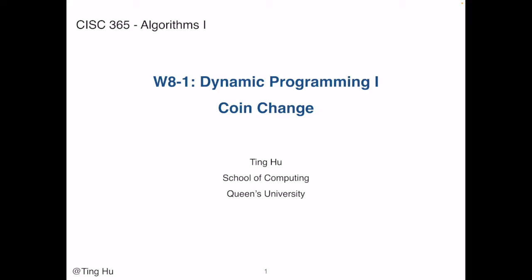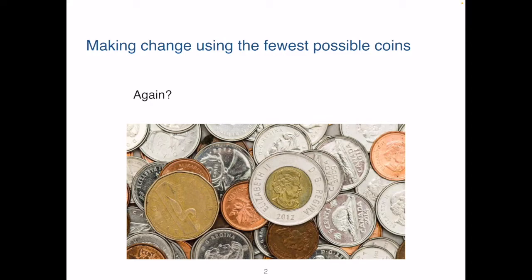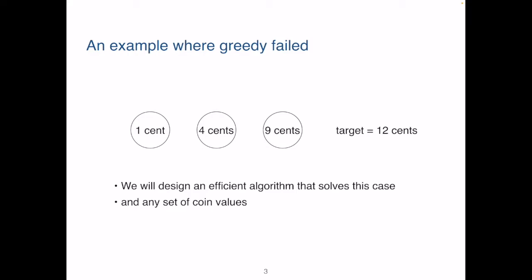Okay, let's dive in. So on the topic of dynamic programming, we will also be using case studies. Some of the problems that we'll look at are actually the ones we saw before. For instance, in this first lecture, we will be revisiting the coin change problem. Recall that the problem is given a target value, we need to use the fewest possible coins to make change. Also recall that our greedy algorithm for the coin change problem failed when the set of coin values is 1, 4, and 9, and when the target is 12 cents, for instance. Today, we will design an efficient algorithm that can solve this case. Not only that, the algorithm we designed today will be able to solve any cases of the coin change problem. So unlike greedy, today our algorithm will never fail.